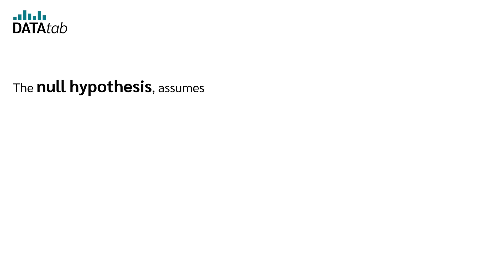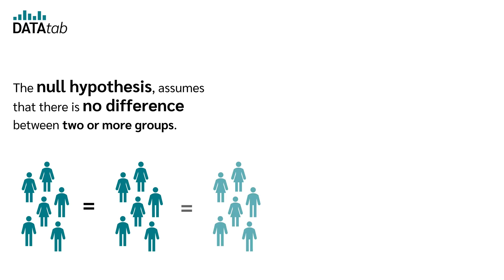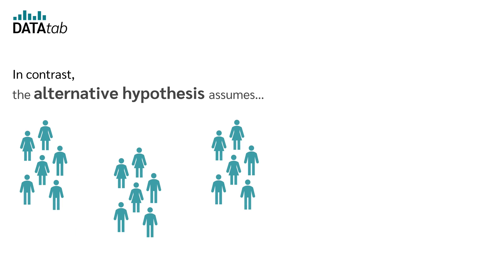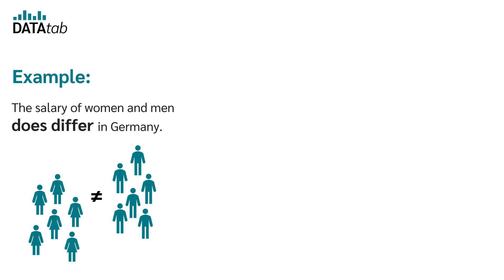The null hypothesis assumes that there is no difference between two or more groups. An example, the salary of women and men does not differ in Germany. In contrast, the alternative hypothesis assumes that there is a difference. Example, the salary of men and women does differ in Germany.